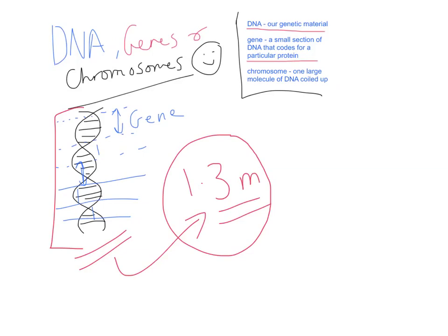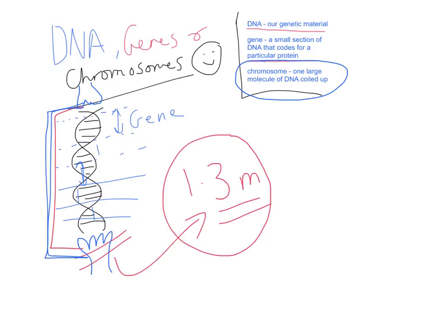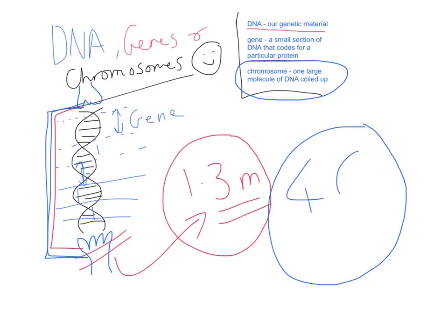Imagine having one hand here and another hand over here, and having both hands twist that DNA coil in opposite directions. What you'd essentially do is super coil that DNA — make it really, really tight, really, really small — and that is this. That is what a chromosome is. A chromosome is just one large molecule of DNA, so this whole molecule of DNA, coiled up really tight. In a body cell — a cell of your cheek, your arm, your leg, your liver, pancreas — they all have 46 chromosomes, a very specific number. So there are 46 of these coiled molecules of DNA in each body cell.